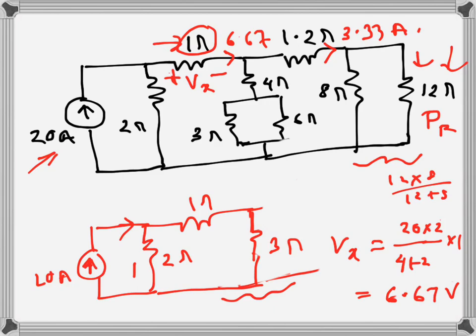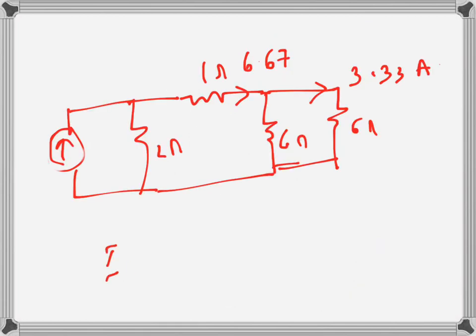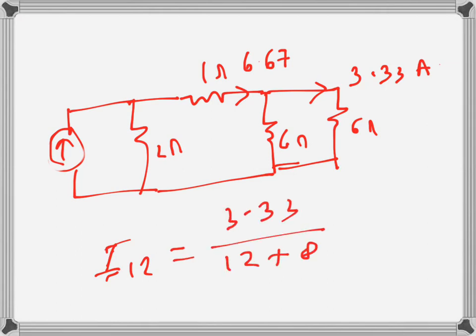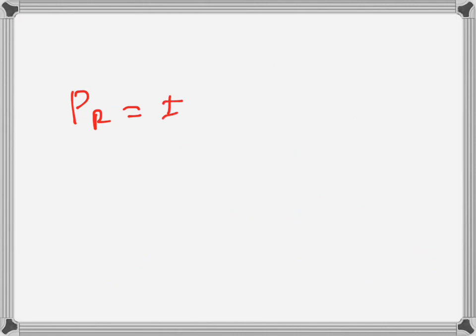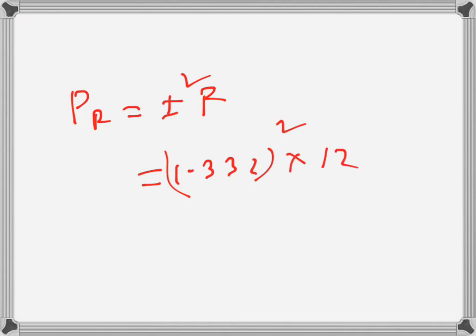This 3.33A is now divided between the 12Ω and 8Ω branches. The current through the 12Ω, called I12, is 3.33 divided by (12 plus 8), times 8 — which equals 1.332A. The power dissipated by the 12Ω resistance is I² × R, so 1.332 squared times 12, which gives approximately 21.3 watts.